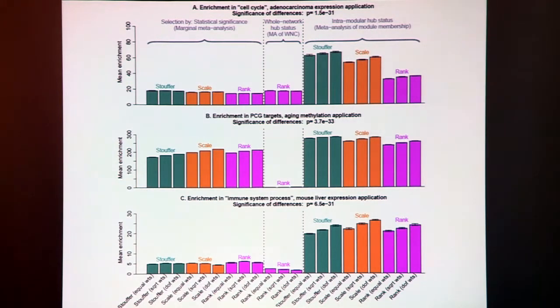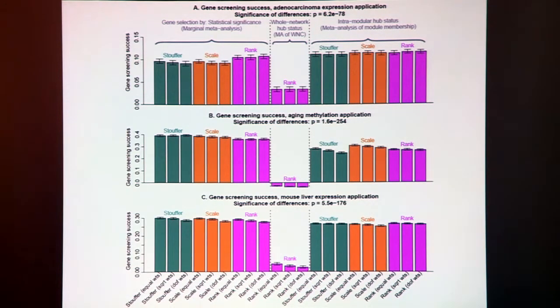The third application was to mouse liver expression data. Again we found a module-based analysis really revealed the relevance of immune system processes. It led to far better biological insights. In certain ways these results justify why you took this course on network methods. If you want to learn biology these methods are very valuable.